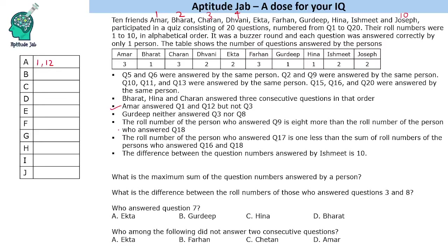Gurdeep neither answered question 3 nor 8. The roll number of the person who answered question 9 is 8 more than the roll number of the person who answered question 18. So we have 2 possibilities: either question 18 was answered by roll number 1 and question 9 by roll number 9, or question 18 by roll number 2 and question 9 by roll number 10.